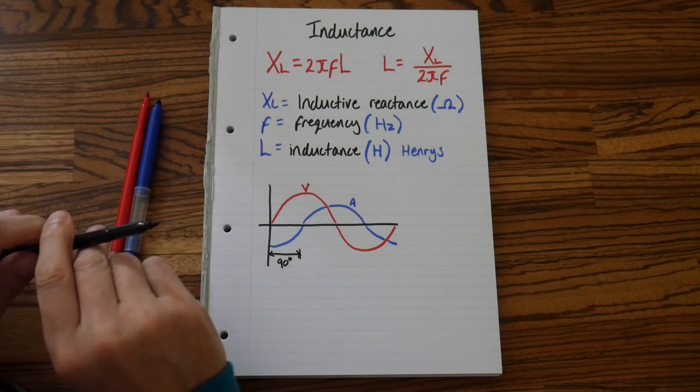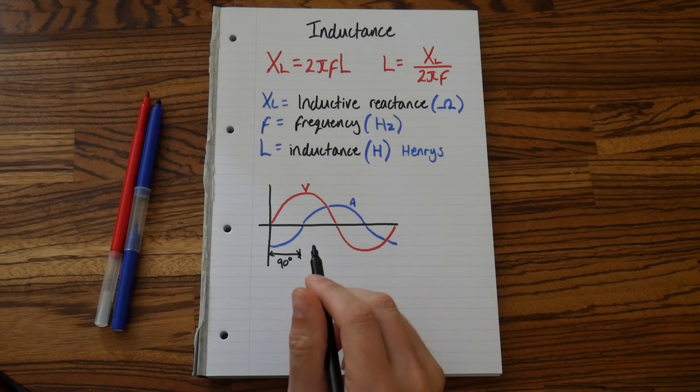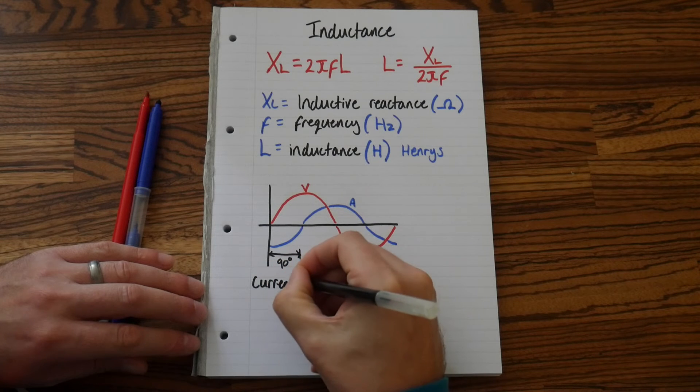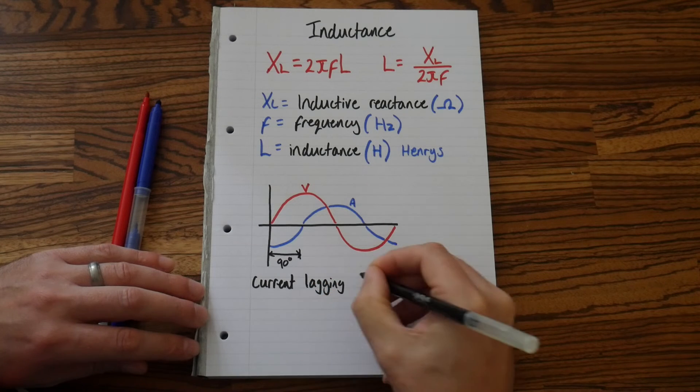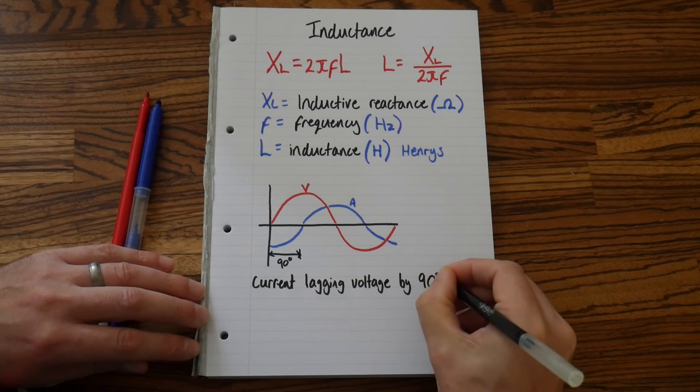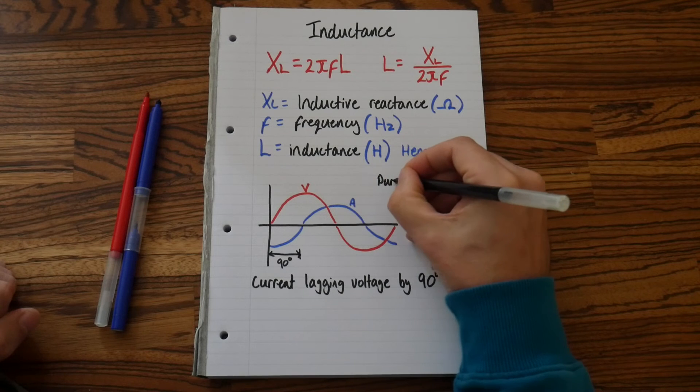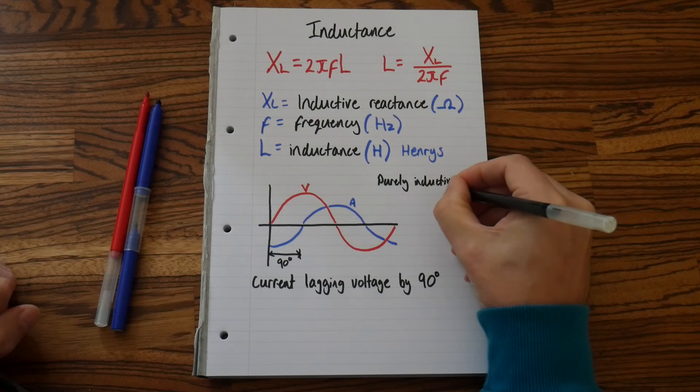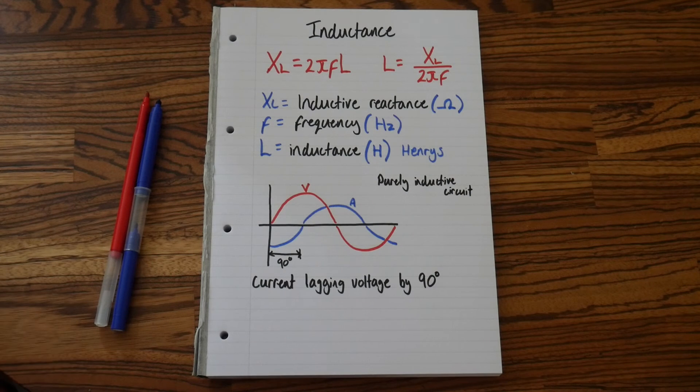Because what reactance does, or what happens in an inductive load, is my current and voltage are out of phase. So in an inductive load, we say current, because we always talk about current first. Current is lagging voltage by 90 degrees. And let's label that purely inductive circuit. Because it would only be in a purely inductive circuit my current lags my voltage by 90 degrees.